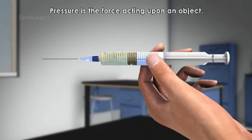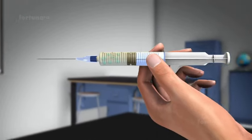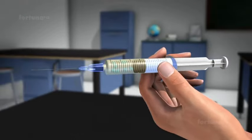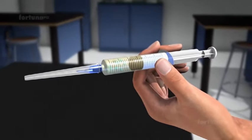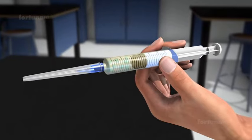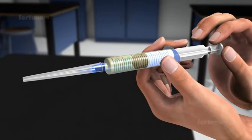Pressure is the force acting upon an object. Let's imagine a syringe filled with air. For our experiment, we'll seal the tip of the needle in order to contain the air inside the syringe. If we push the plunger, it will move only to a certain point before stopping.